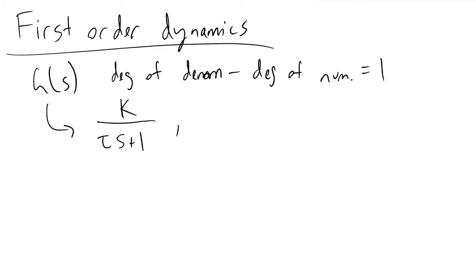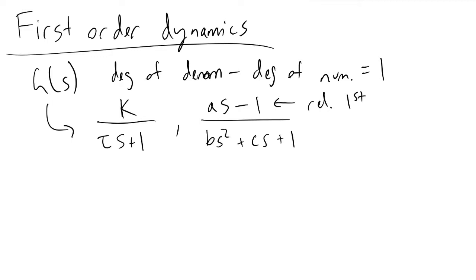We can also have what are referred to as relative first-order systems. This occurs when we have a transfer function that looks like (as − 1) over (bs² + cs + 1). This is more complicated because we are now dealing with zeros, which are the roots of the numerator, and zeros will affect our system's behavior. Zeros will cause the output to change direction — the number of zeros is equivalent to the number of times the output changes direction. If we have one zero, we'll recognize inverse response behavior initially before reaching a new steady-state value.